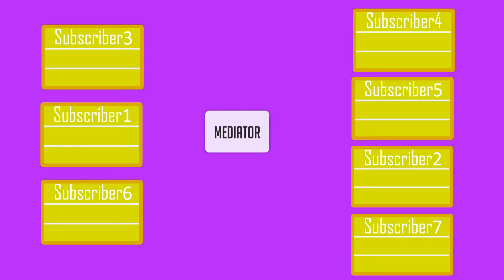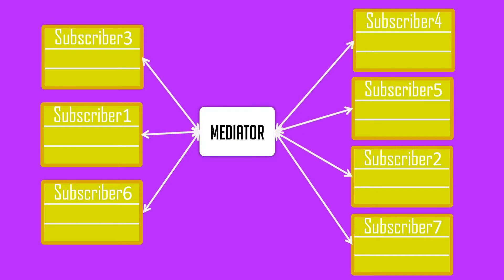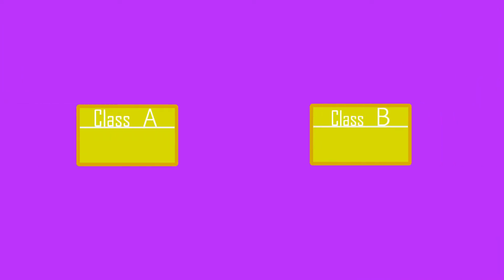So in this kind of situation the mediator pattern is best suited. The mediator pattern allows objects to avoid communicating directly — instead it enables communication via a central mediator object. Let's see in detail all the components of this pattern and how it is implemented.